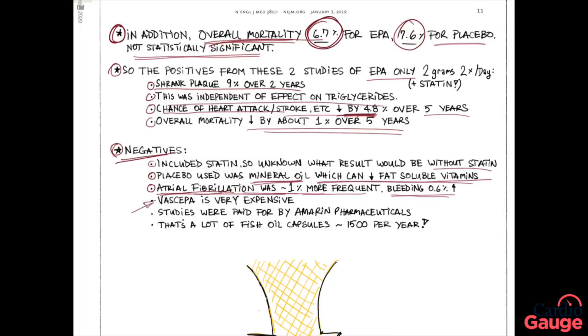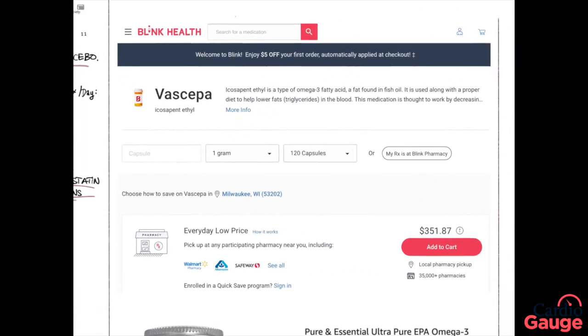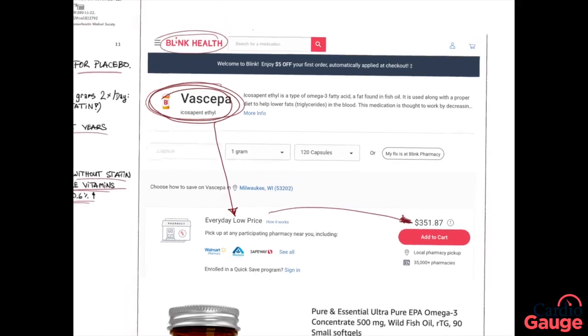A really big negative here is that the Vascepa is super expensive, costs a ton. If you were to go to your friendly neighborhood online drugstore—I often recommend Blink Health, I don't get any money from them—but anyway, Vascepa, put that in there, oh, every day low price, yeah, you got it, $350 a month. And not many people are going to pay that or anywhere near it. The insurance companies, they hate Vascepa.